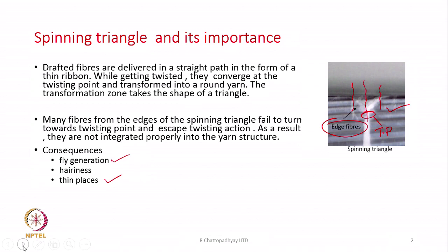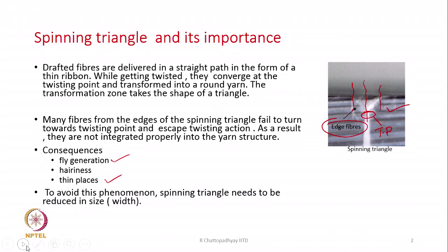It means the quality of the yarn is deteriorating. To avoid this phenomenon we need to suppress the spinning triangle — we have to reduce the size of the spinning triangle, especially the width of the triangle. The solution is to suppress the spinning triangle size, and mostly it is the width that matters.